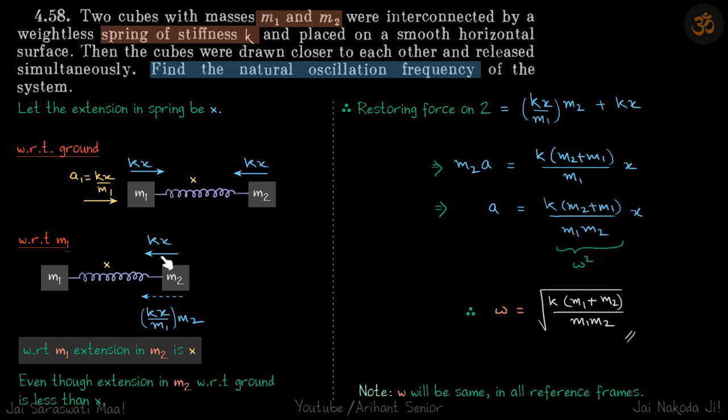With respect to m1, extension in m2 is x, even though the actual extension in m2 with respect to ground is less than x and we don't know what is its value. So it's better to do it in this way. We save one calculation here if we have to analyze it with respect to ground.